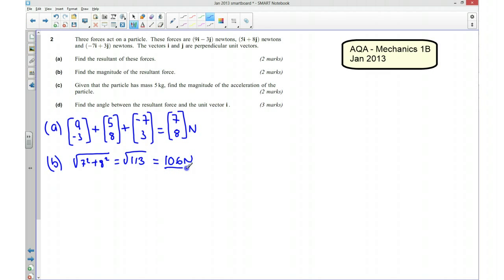And that's the magnitude of the resultant force right there. So part C is telling us that the particle has a mass of 5 kilograms and we want to find the magnitude of the acceleration of that particle. So we know the force and we know the mass and we want to work out the acceleration. So we can use Newton's second law.